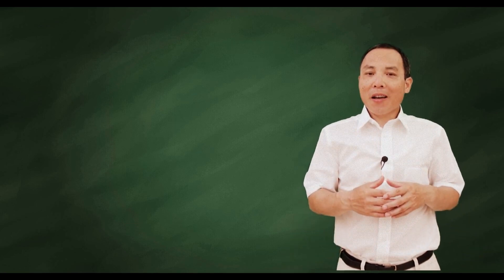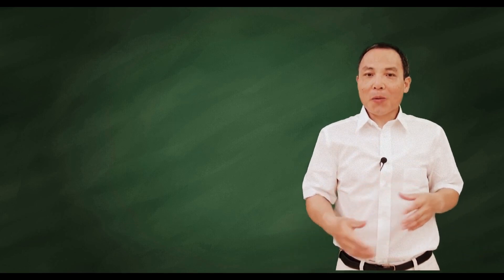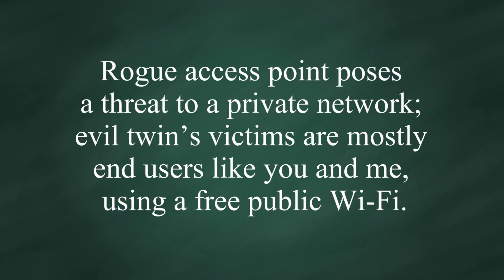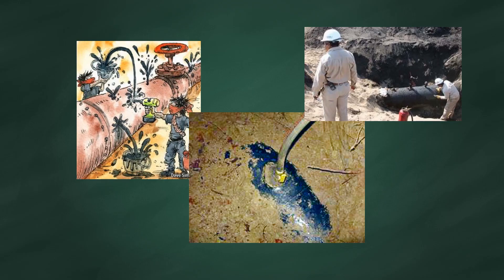Hello, and this is Sunny. Welcome back. Rogue Access Point and Evil Twin are two different types of wireless threats. Rogue Access Point poses a threat to a private network, and Evil Twin's victims are mostly end-users like you and me using free public Wi-Fi.